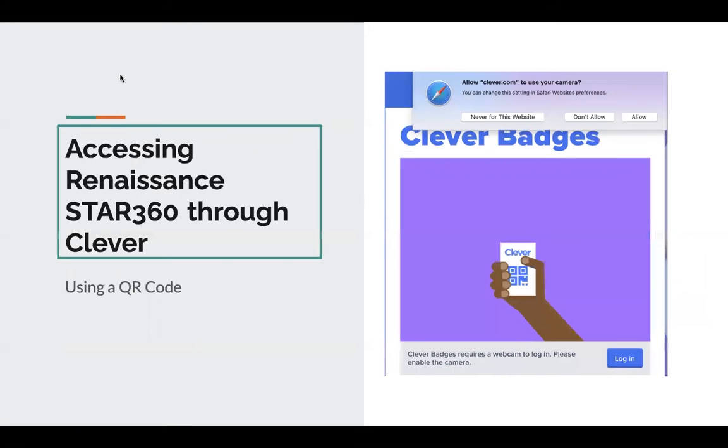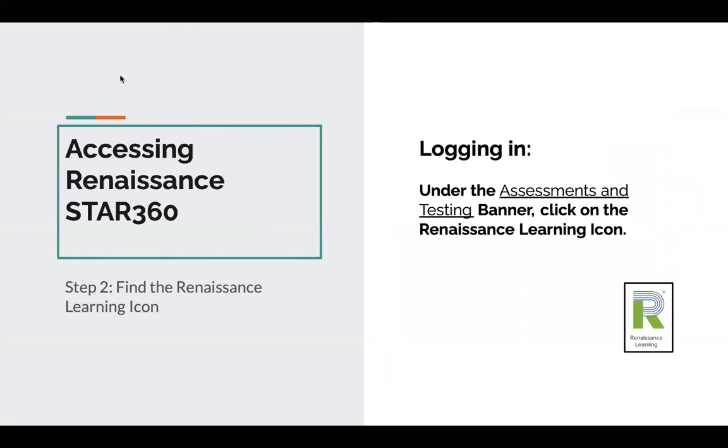If the student is using a QR code, they will first need to activate the camera on their device by clicking on the allow button, and then hold their QR code in front of the camera. Once students are in Clever, they should scroll down to the assessments and testing banner, where they will see the Renaissance Learning icon shown here, and they should click on the icon.